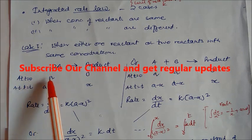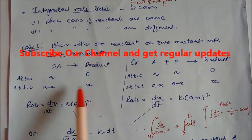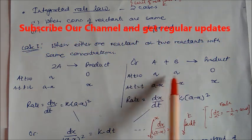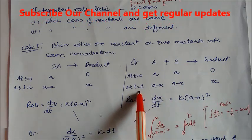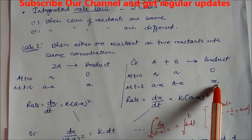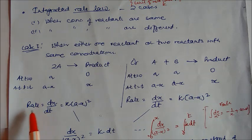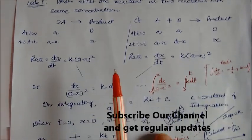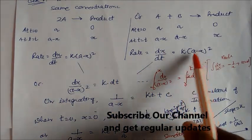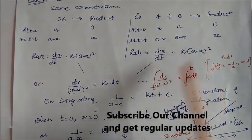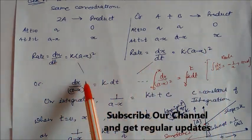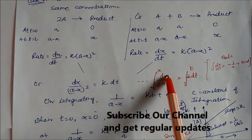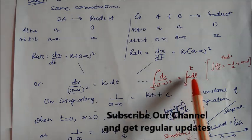At initial time t=0, concentration of A is A₀ and product is 0. At time t, concentration of A is A minus x, and product is x. By using the differential rate law, rate equals dx/dt equals K into (A minus x)², Integrating dx/(A minus x)² equals K dt, from 0 to x and 0 to t respectively.